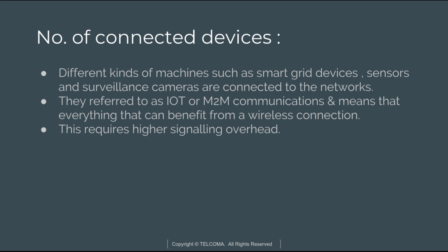The next challenge is the number of connected devices. The total number of connected devices in the future will be 10 to 100 times higher than today. We have different kinds of machines like smart grid devices, sensors, and surveillance cameras — each device connected to the network. We refer to this as the Internet of Things or machine-to-machine communication, meaning everything can benefit from a wireless connection, which requires higher signaling load or overhead.